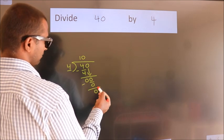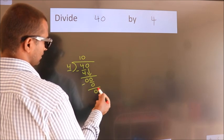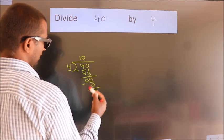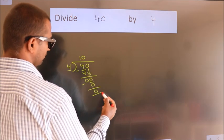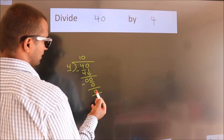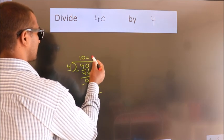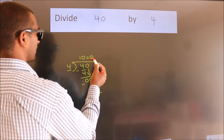After this, no more numbers to bring down. And we got remainder 0. So this is our quotient.